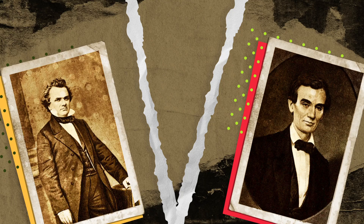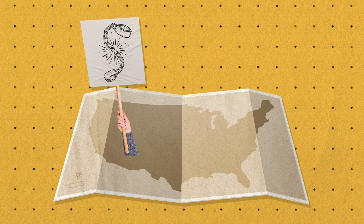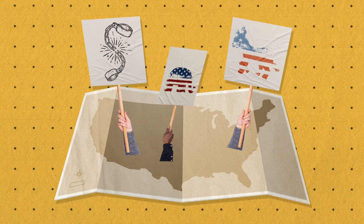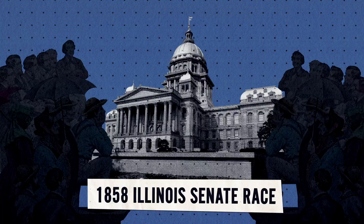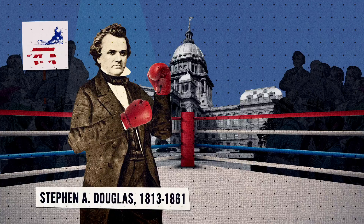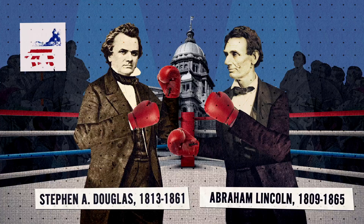Taking place at a time of major political upheaval in the U.S., when the issue of slavery and questions of racial equality were central to both local and national politics, the Lincoln-Douglas debates were part of the 1858 Illinois Senate race between incumbent Stephen A. Douglas, member of the Democratic Party, which was split over the issue of slavery between North and South, and challenger Abraham Lincoln, who belonged to the newly formed Republican Party, which was anti-slavery and rooted firmly in the North.